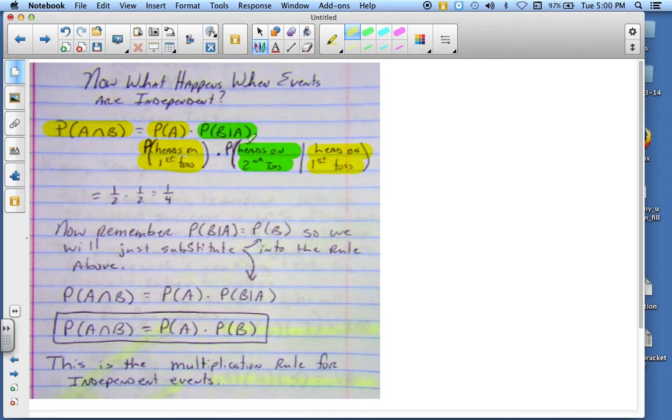Now, these are independent events. That means the second toss doesn't depend on the first toss. All right, that's this right here. The second one does not depend on the first toss.